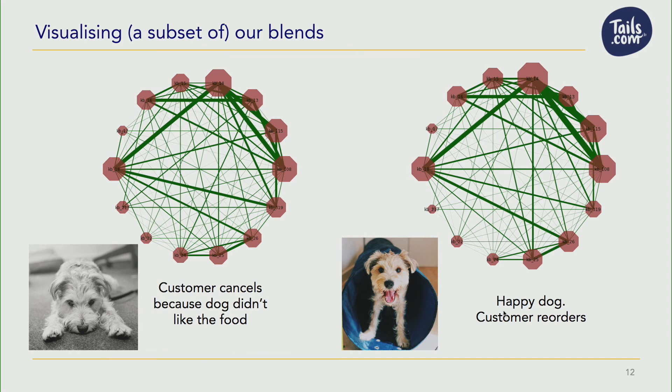Now let's compare that for one of our dogs and see what the graphs look like for customers that don't like the food and end up cancelling, compared to customers with happy dogs that keep ordering our food. Ultimately, you can see there's not all that much difference right now in how they look, because the insights we're looking for are quite fine. If it was that easy, we wouldn't need to use a technique like network analysis to understand what's good and what isn't.